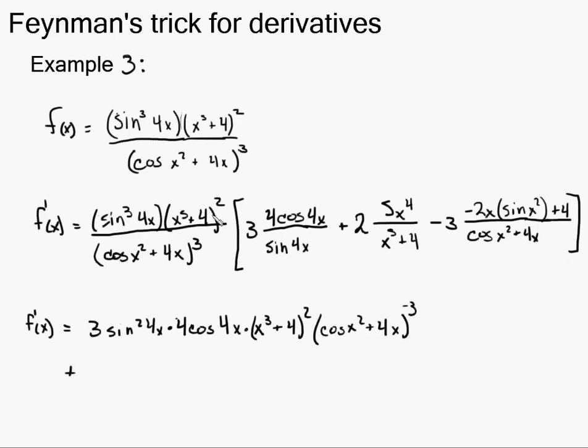Then the second term would have plus, I leave this alone sine cubed 4x. And then I take the derivative of this term, 2 times 2 times x to the 5th plus 4, and then the derivative of the inside, so 5x to the 4th. And then I also multiply it by this whole big thing, cosine x squared plus 4x all to the negative 3.